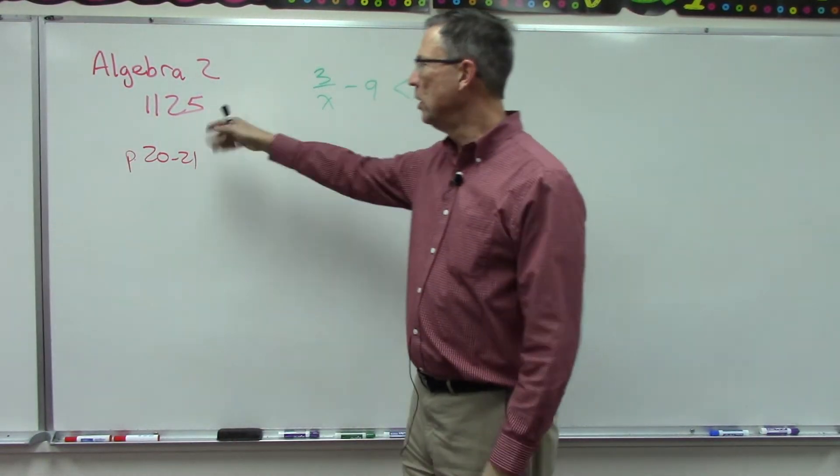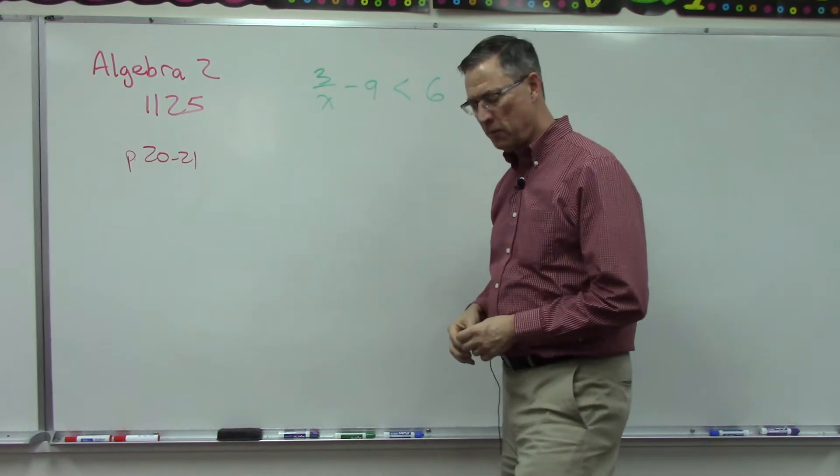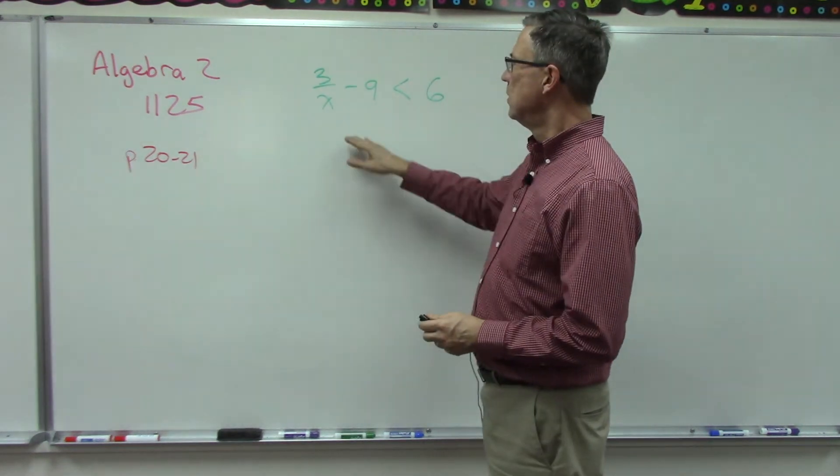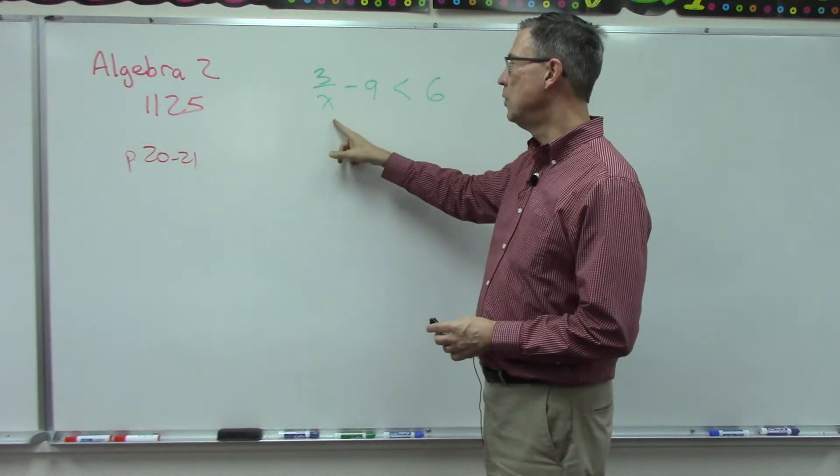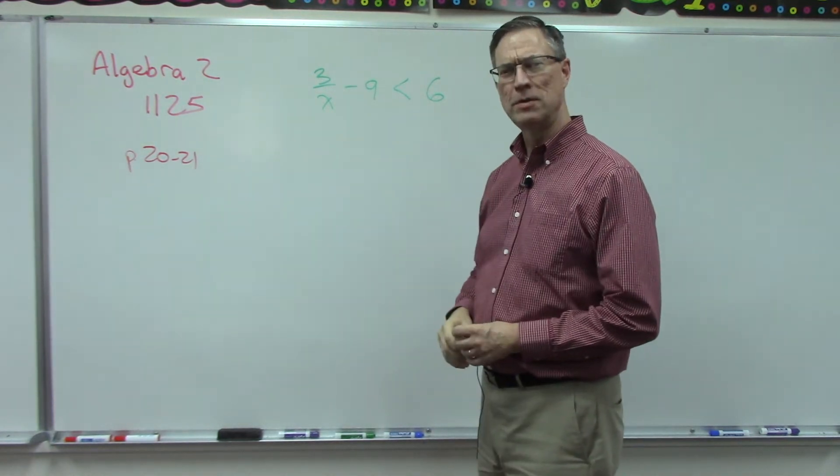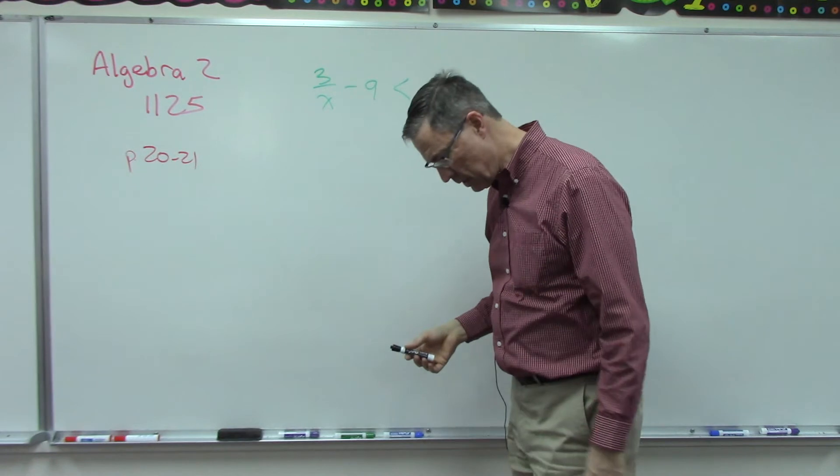Let's look at pages 20 and 21 on page 1125 of the Algebra 2 pace. This is solving inequalities and having to get rid of a denominator by multiplying through by the common denominator.